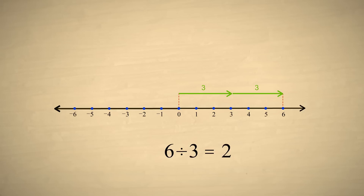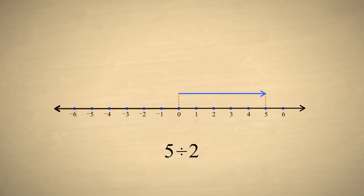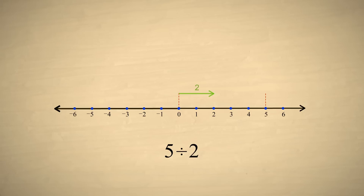In this example, we divided the natural number six by the natural number three and got another natural number, two. But the result of a division operation involving natural numbers cannot always be represented by a natural number. For example, what if we divide five by two? Using the first interpretation, we divide five into two equal pieces — the length of each piece is greater than two but less than three, so this length cannot be represented by a natural number. Using the alternate interpretation, we ask how many times two fits into five. Two does not fit into five evenly. Either way, the result of five divided by two cannot be represented by a natural number.